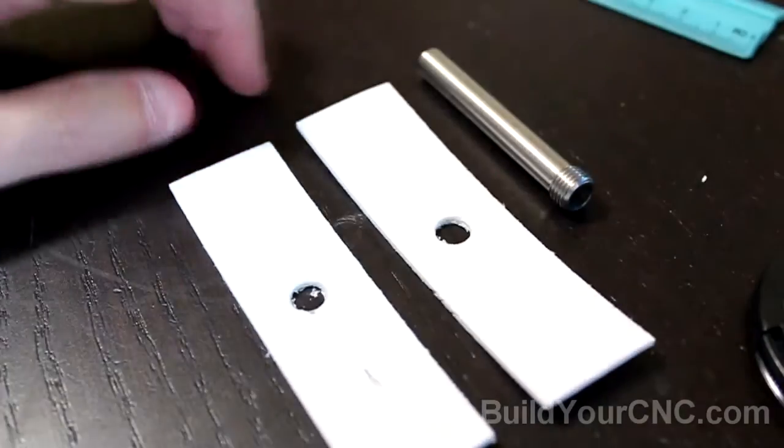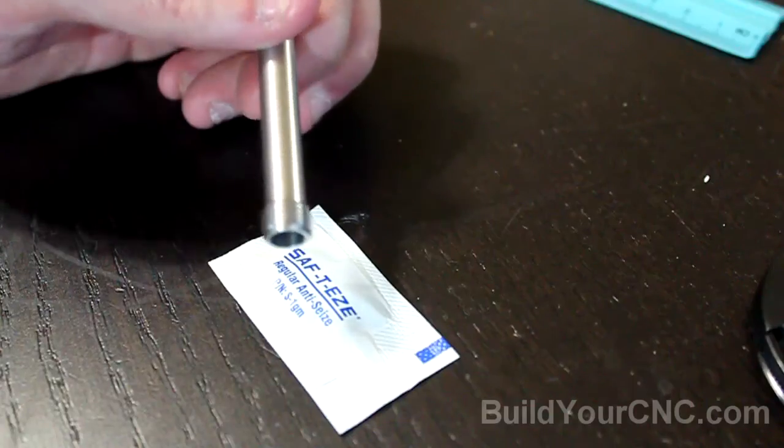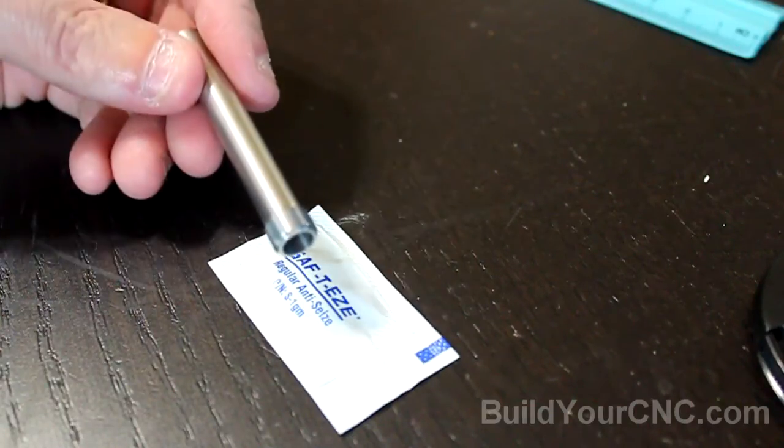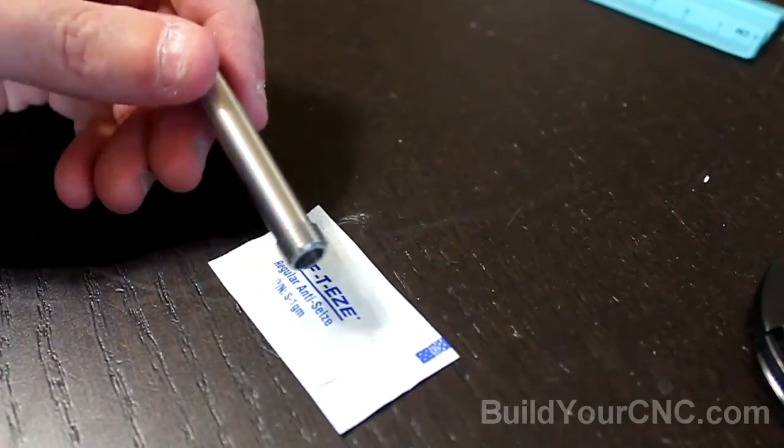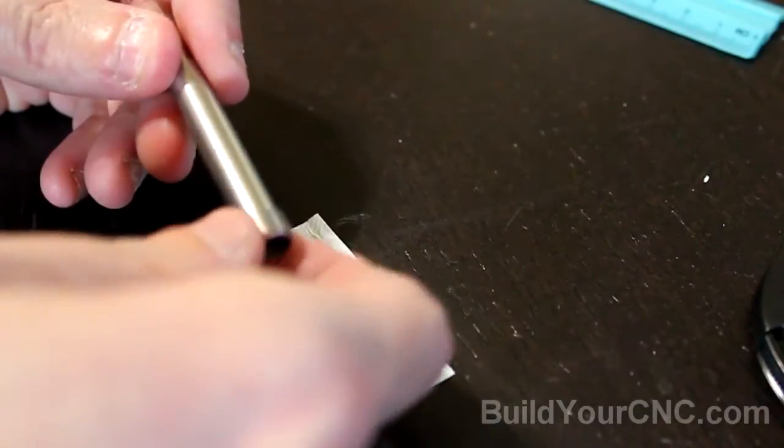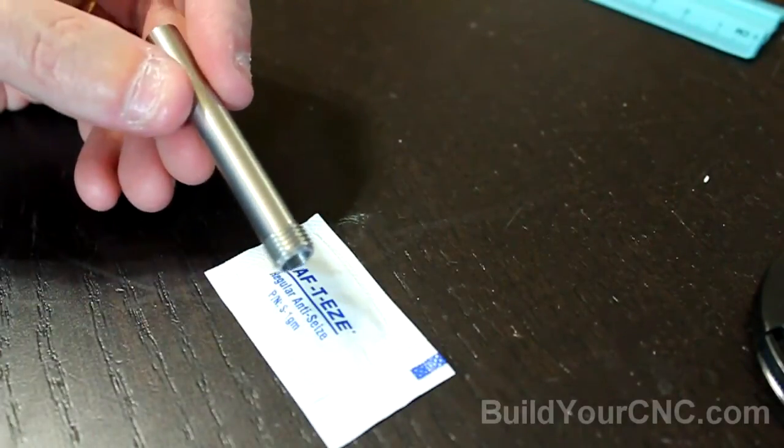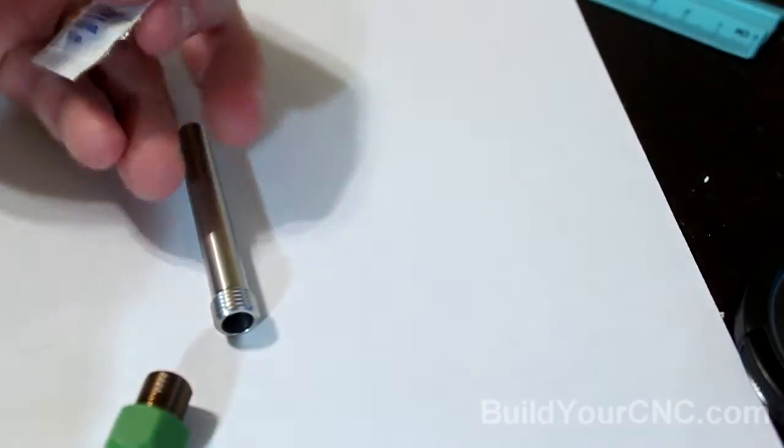The longer one will have the same center cut. The kit will also include a solution that will be used to eliminate any seizing of the assembly due to heat. So we're going to be putting this stuff on the threads of both the nozzle and of this tube. Apply the anti-seize solution on the threads of the nozzle and of the thermal barrier.